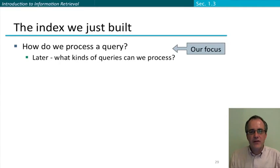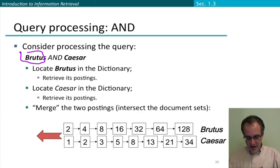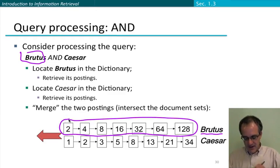So suppose we want to process a query. Suppose our query is Brutus and Caesar. Well, let me even do a simpler example than that. Suppose the very first kind of query we want to look at is just a query for Brutus. How to do that is totally straightforward. What we do is locate Brutus in the dictionary, and then we return its postings list. This is the set of documents where Brutus occurs, and we don't need to do anything else.